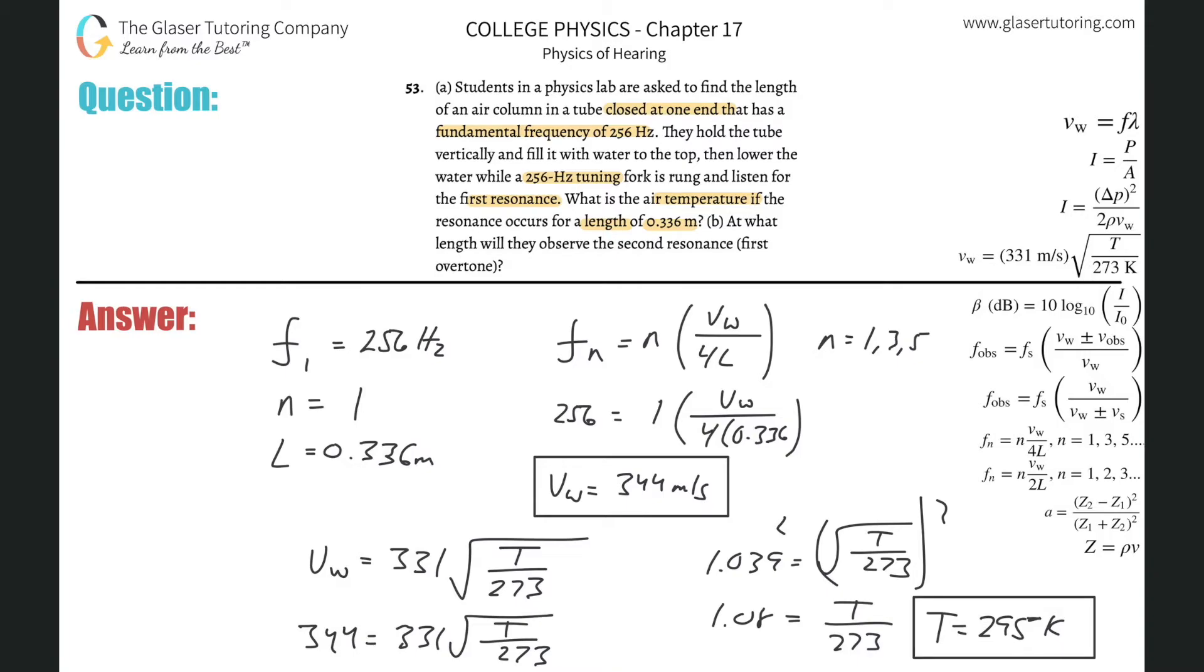And then letter B, it says at what length will they observe the second resonance, aka the first overtone. So now the second resonance here correlates with the third harmonic. This is the first resonance, that's the second, this is the third, et cetera. It skips basically the second harmonic when you have a tube closed at one end.